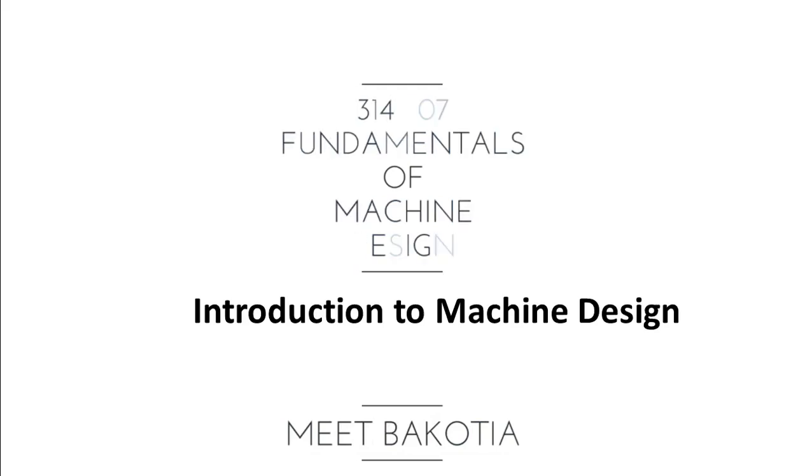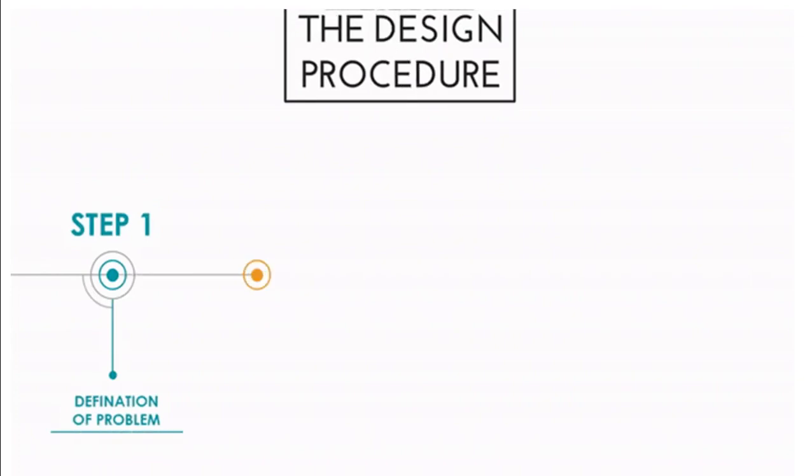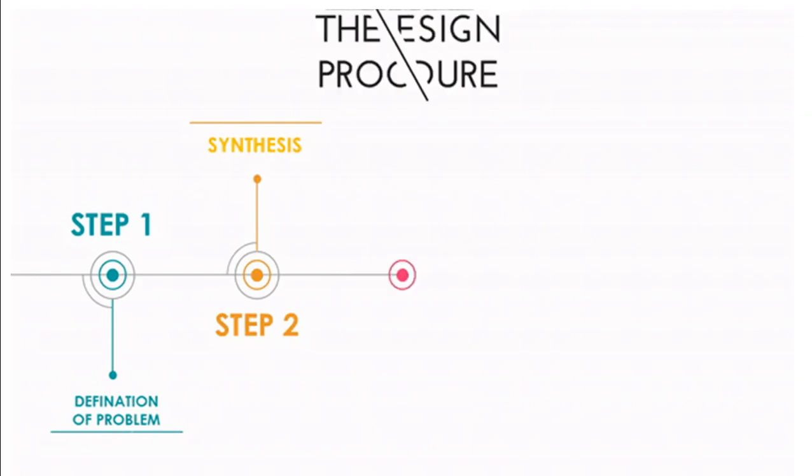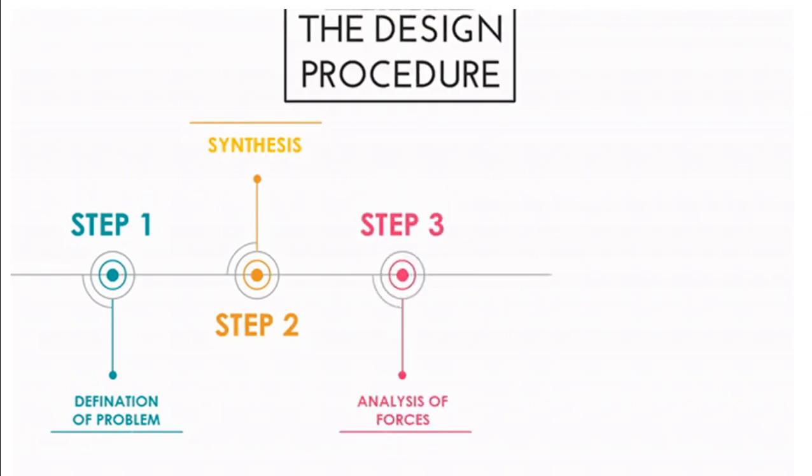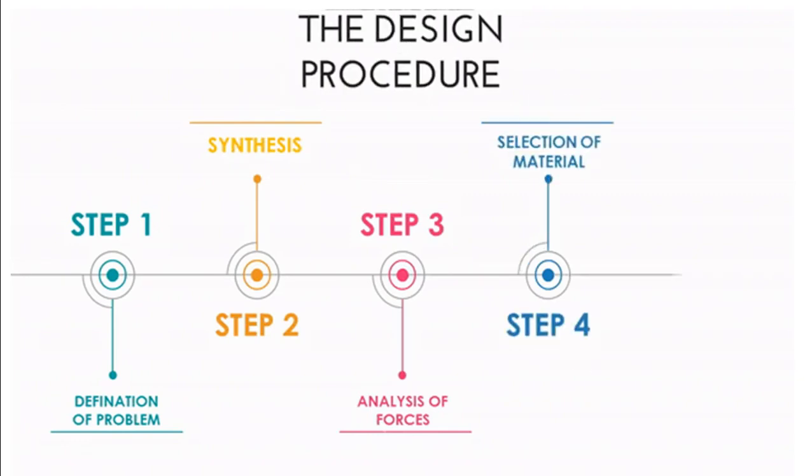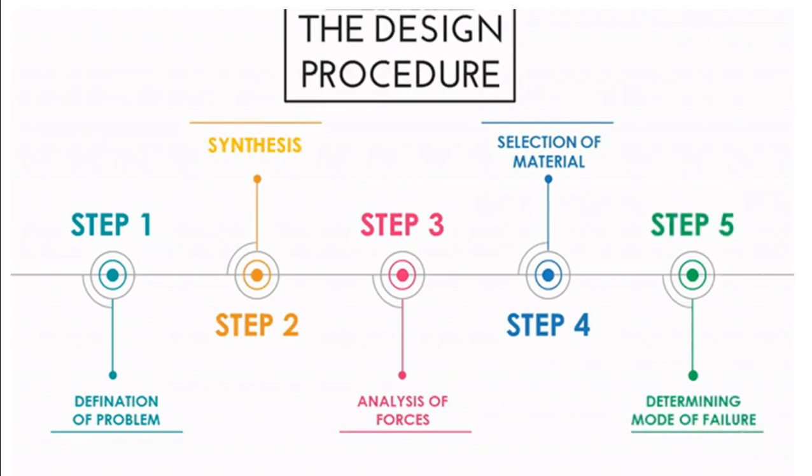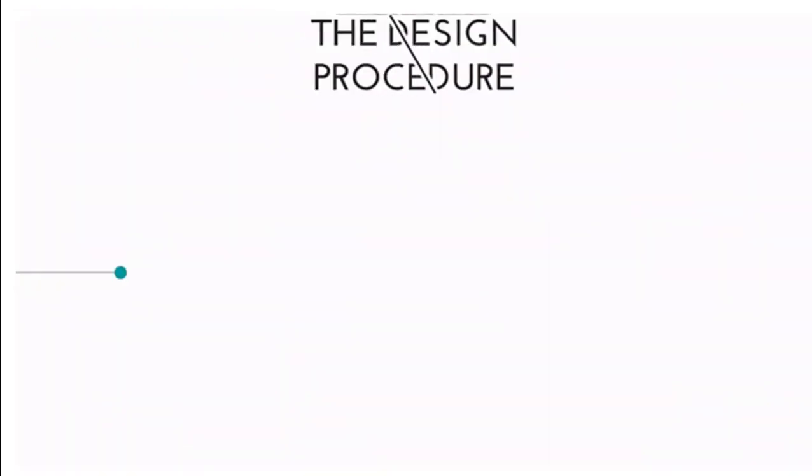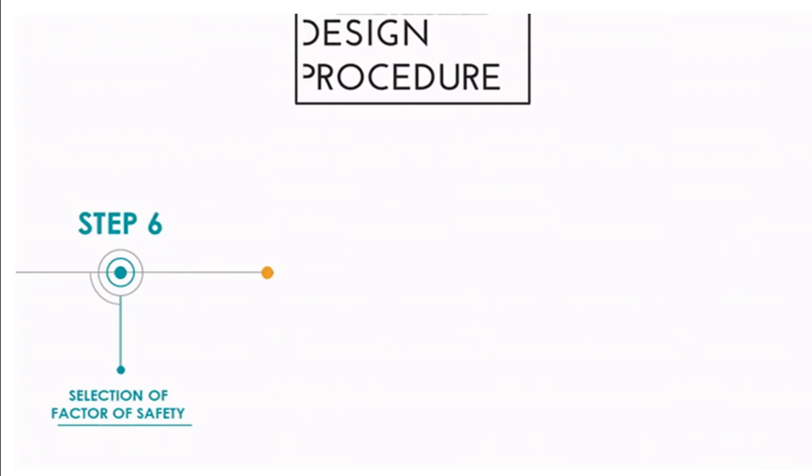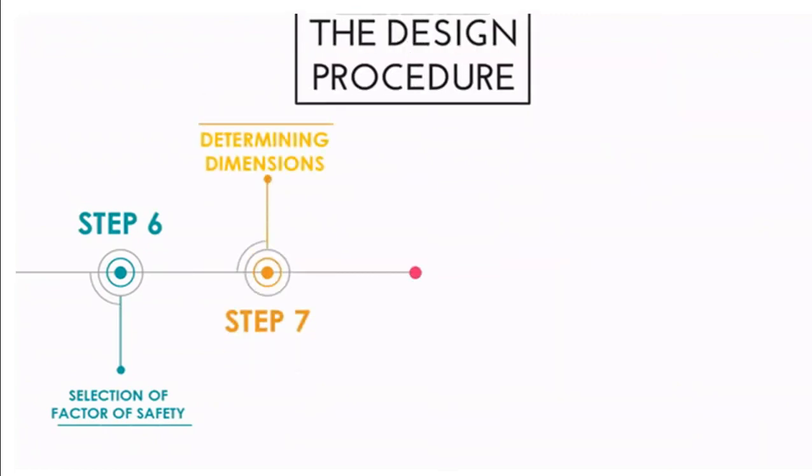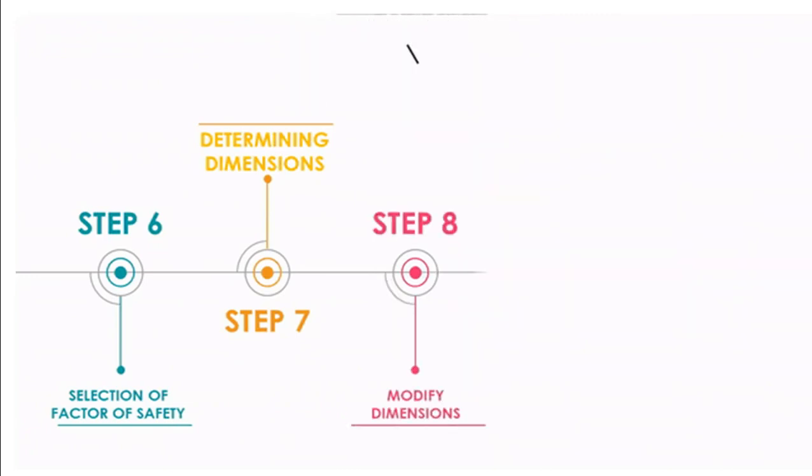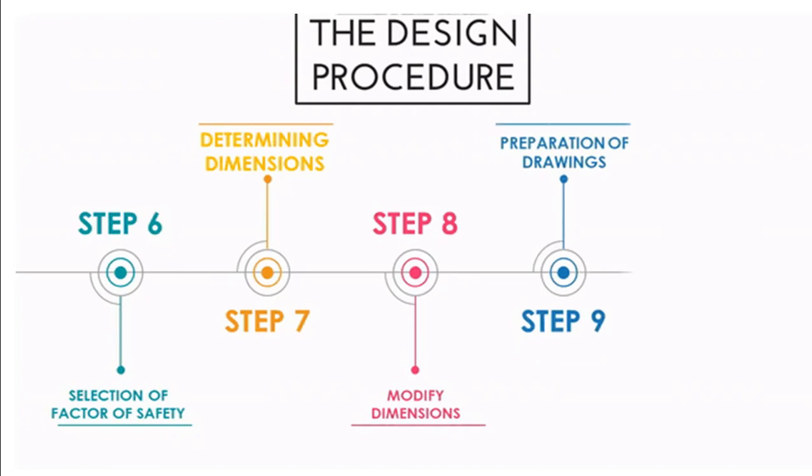Introduction to machine design. This is the machine design procedure: Step 1 definition of problem, Step 2 synthesis, Step 3 analysis of forces, Step 4 selection of material, Step 5 determining mode of failure, Step 6 selection of factor of safety, Step 7 determining dimensions, Step 8 modifying dimensions, Step 9 preparation of drawings, Step 10 preparing design report.